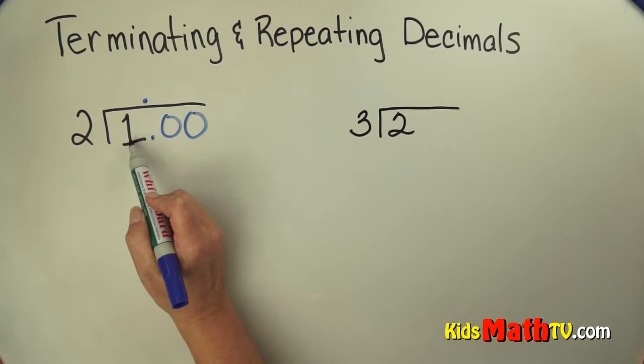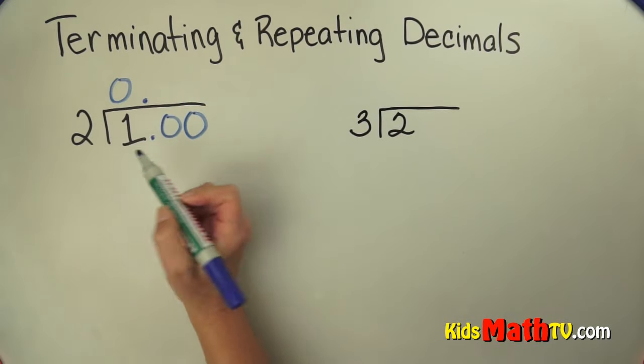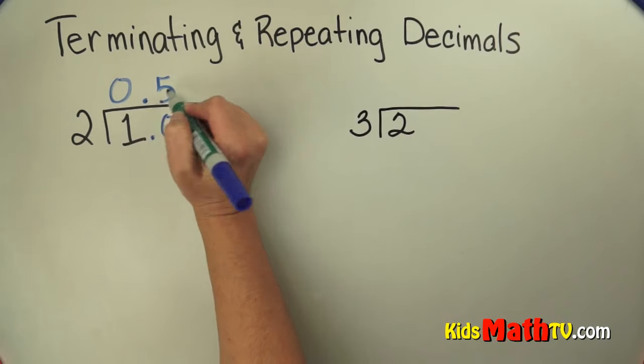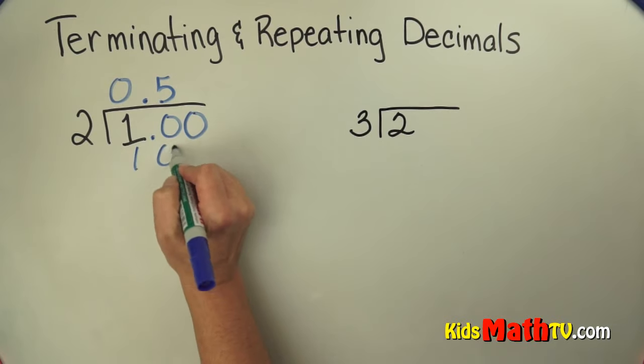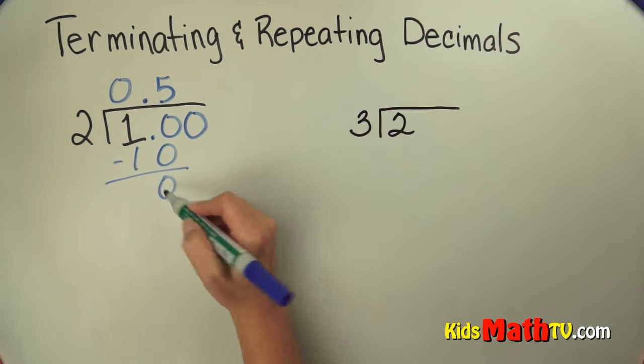How many 2's are in 1? There are 0. How many 2's are in 10? Well there are 5. 5 times 2 is 10. Subtract and it comes out even.